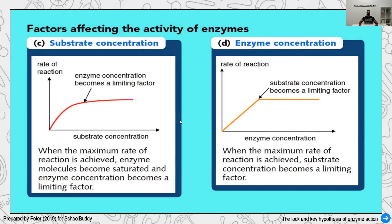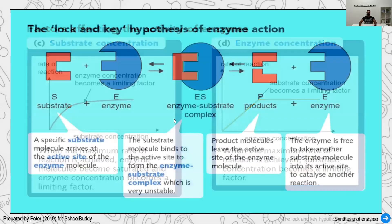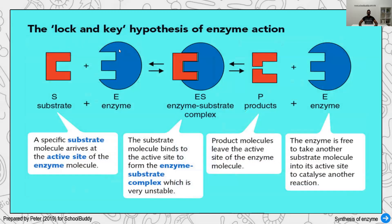Now let's look at enzyme activity with the lock-and-key concept. The substrate is the key and the enzyme is the lock. The substrate can sit at the active site of the enzyme — this part marked E is the active site. When the substrate binds to the active site of the enzyme, it forms an enzyme-substrate complex. Because this complex is unstable, enzyme action takes place and breaks down the substrate into a product — so the substrate, which was a single unit, is broken down into product components.